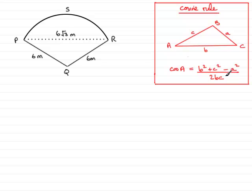Using this formula, cos(PQR) equals the sum of the squares of the two sides that surround the angle, which is 6² + 6², minus the opposite side squared. The opposite side is PR, so that's (6√3)².